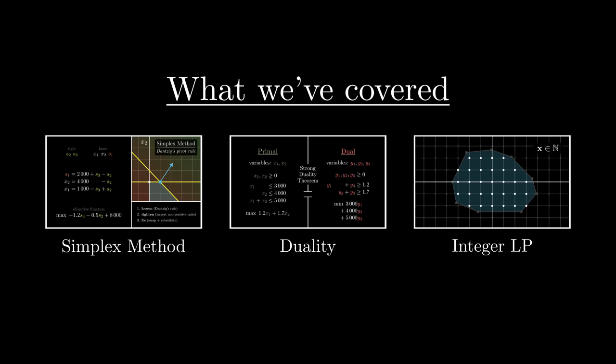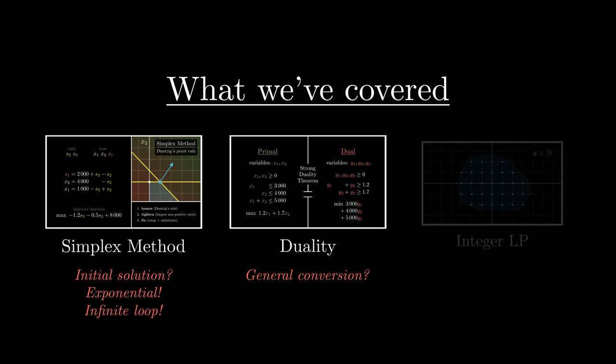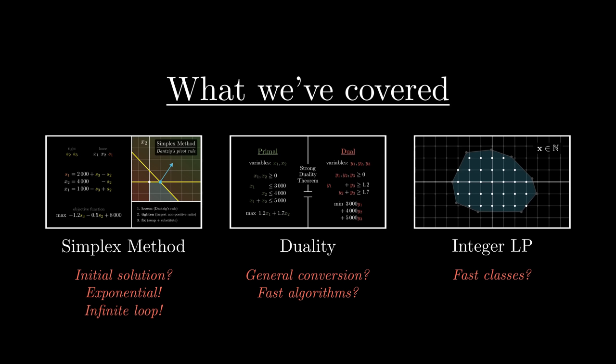For the simplex method, what if 0, 0 isn't a vertex? How do we start? Also, the way we described it, the method might run in exponential time, and may even get stuck in an infinite loop. Can we fix this? For duality, does every linear program have a dual? And if so, how do we create it? And once we do, can we use it in developing fast algorithms for the primal? And last but not least, are there classes of ILP problems that can be solved in polynomial time? And for those that aren't in such class, can we at least get approximate solutions in polynomial time?